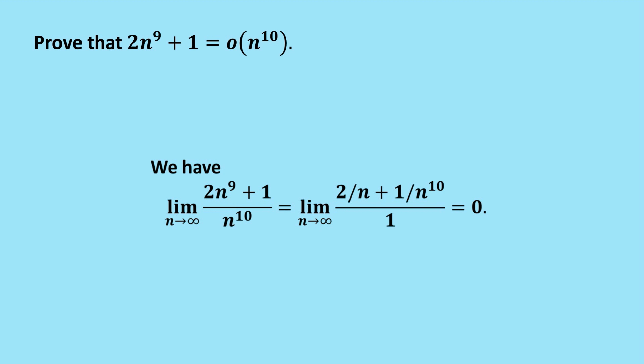So, having shown that the limit equals 0, we can now conclude that 2n^9 + 1 equals small o of n^10, and that gets the big green tick.